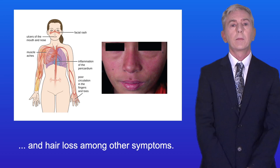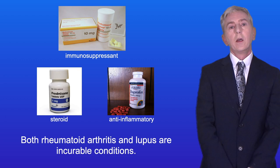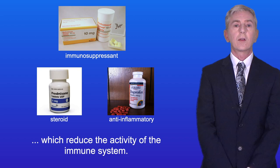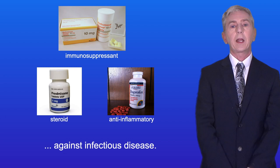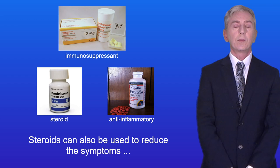Both rheumatoid arthritis and lupus are incurable conditions. Treatment can involve using immunosuppressant drugs, which reduce the activity of the immune system. However, these drugs can reduce the body's ability to defend itself against infectious disease. Steroids can also be used to reduce the symptoms, as well as painkillers and anti-inflammatory drugs.